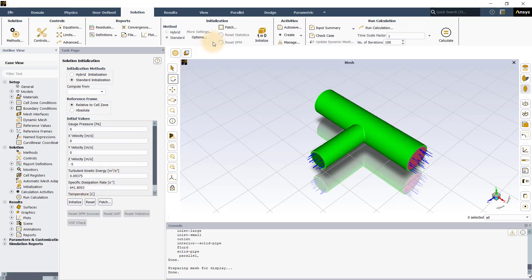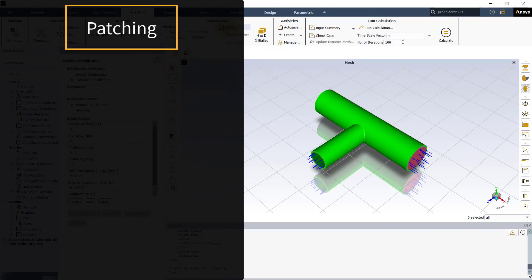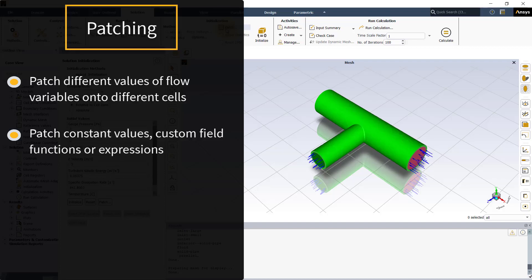Let us now look at the next method of initialization that is patching. The patch option is used to patch different values of flow variables onto different cells. You can patch constant values, custom fill functions or expressions to shell zones and shell registers.